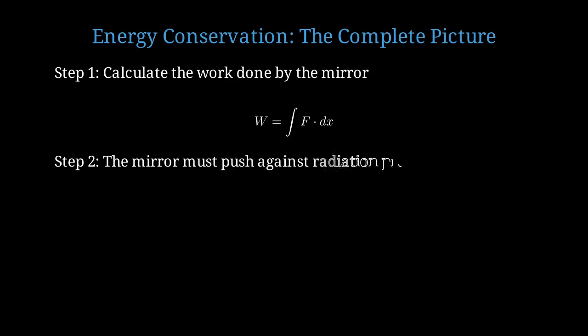As photons are created, they exert radiation pressure on the mirror. The moving mirror must do work against this radiation pressure. This is where the energy of the photons comes from. The total energy of the created photons is E photons equals the sum over n of h-bar omega n, where omega n is the frequency of each created photon. When you account for the work done by the external force moving the mirror, the kinetic energy of the mirror, and the energy of the created photons, energy is exactly conserved. No energy comes from nowhere.